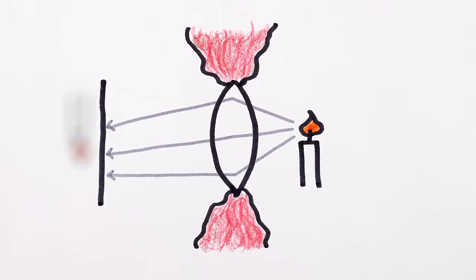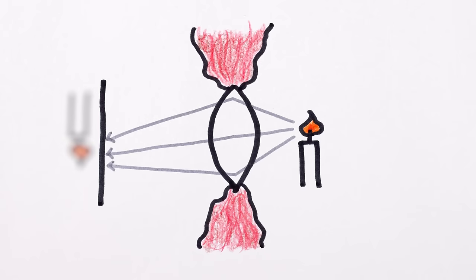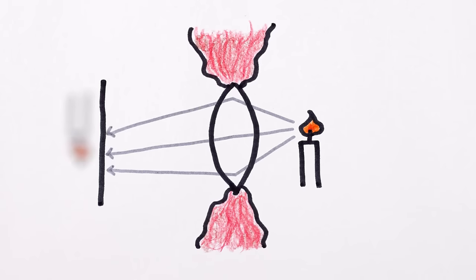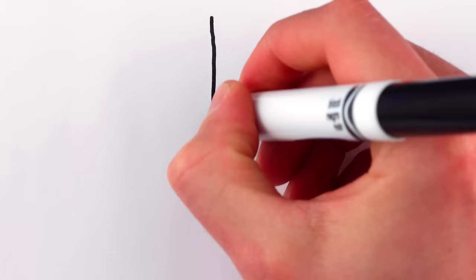Fortunately, muscles in our eyes allow us to accommodate by squeezing the lens, which changes its focal length so we can see at different distances. Except when we can't, or when our lenses become damaged, in which case we need glasses.